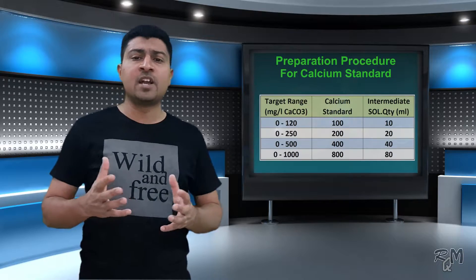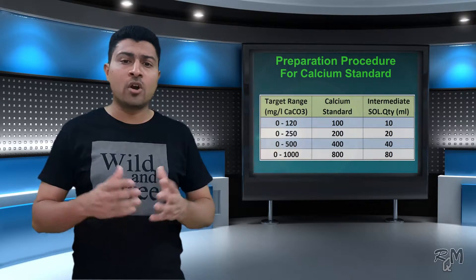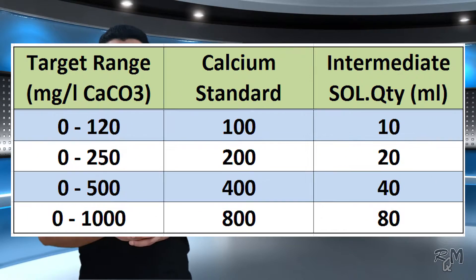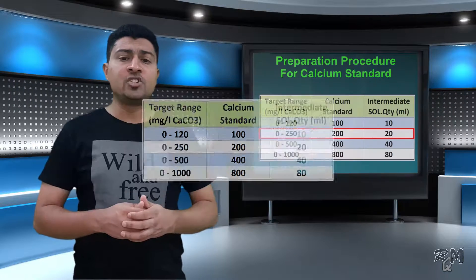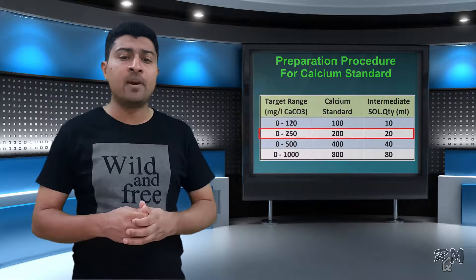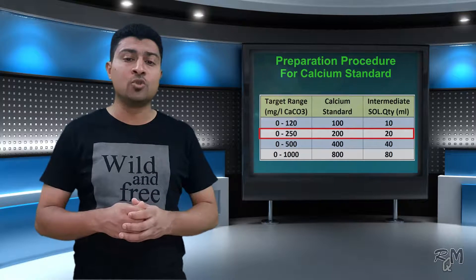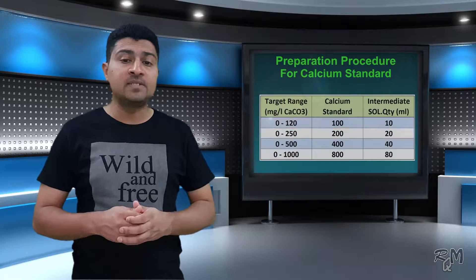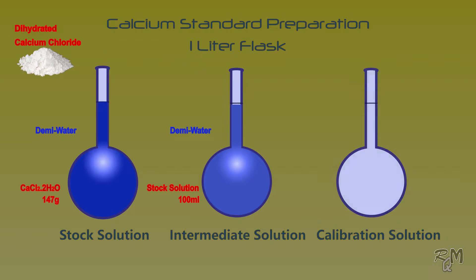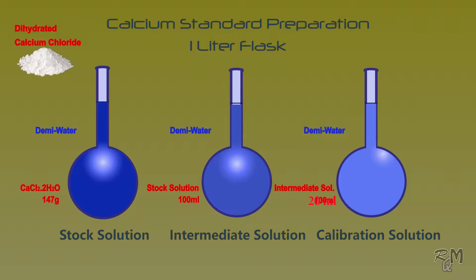Now you can prepare calcium standard for your target range according to this table. For example, if the target range is 0 to 250 mg per liter, then we need to prepare a 200 mg per liter standard solution for calibration. For this purpose, take a graduated flask of 1 liter and introduce precisely 20 ml of intermediate solution with a pipette, then top up to 1 liter with demineralized water to prepare 200 mg per liter standard solution of calcium.